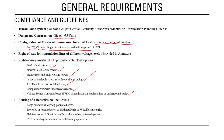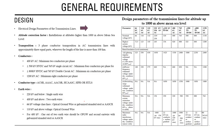Habitat zones of the Great Indian Bustard (GIB) must also be avoided. CEA has published separate guidelines specifying what structures, insulators, and protections are required when transmission lines pass through GIB areas. Finally, civil or military airfields and aircraft landing approaches are the fourth major concern to be avoided when routing transmission lines.